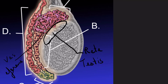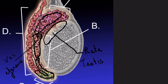From the vasa efferentia, sperm are conducted into the head of the epididymis where they are stored temporarily and become more functional. They then move into the corpus of the epididymis, then into the tail of the epididymis or cauda epididymis. Finally, they are conducted via the vas deferens into the ejaculatory duct, where they are transferred into the female reproductive system through the urogenital duct.